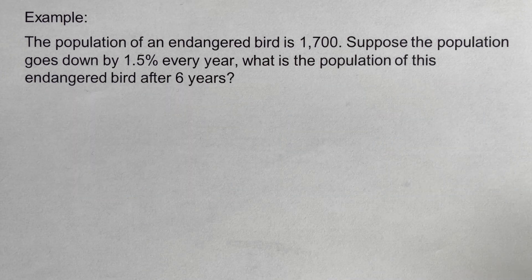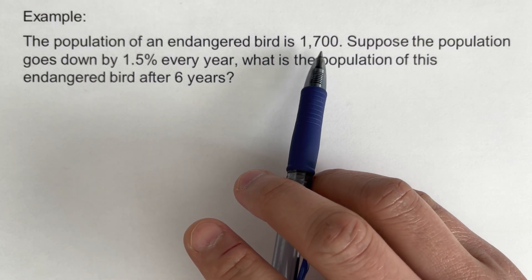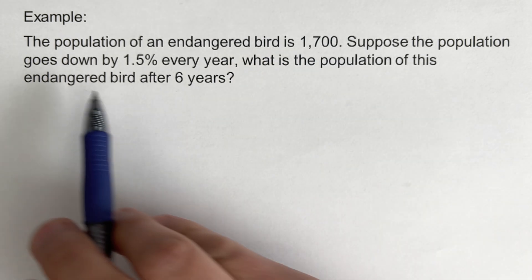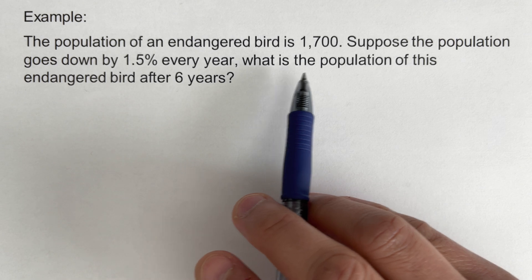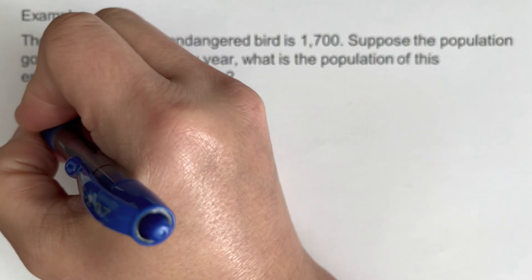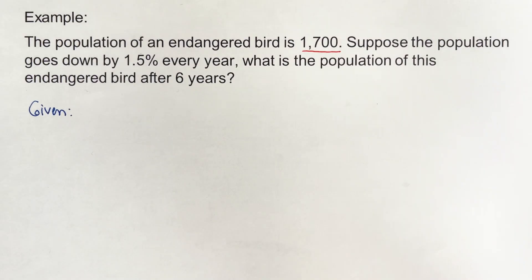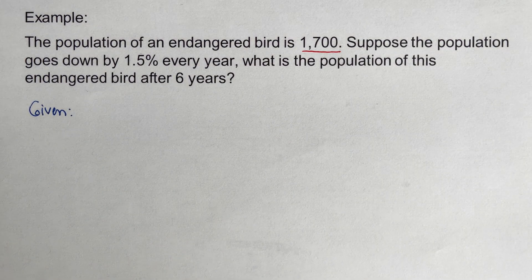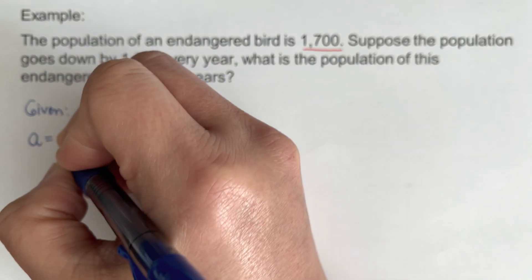Now we go over the next problem. The population of an endangered bird is 1,700. Suppose the population goes down by 1.5% every year. What is the population of this endangered bird after six years? We write the given values. The first one is 1,700 — that is the initial number of birds, so a equals 1,700.